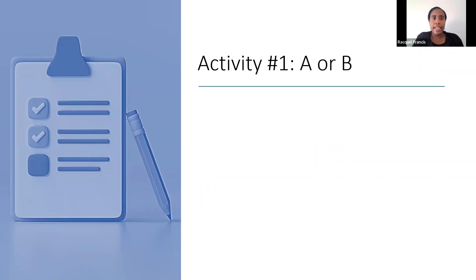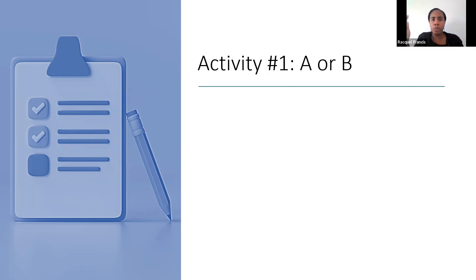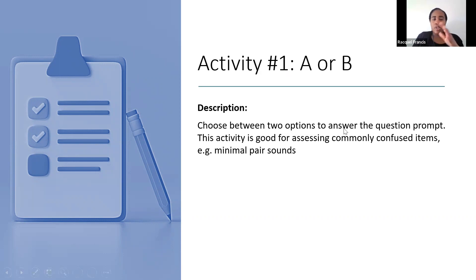This is called A or B. This activity comes from a wonderful website from an instructor called Technologic, who designed some of the activities in this presentation. Some others were designed by me as I was inspired by him. A or B — you can think of it as the digital version of the classical activity Vote With Your Feet, where students move from one side of the classroom to the other to show their response, but in digital form. They choose between two answer options — A or B — from a question prompt. It's good for assessing anything commonly confused, whether for pronunciation like minimal pairs or different words.